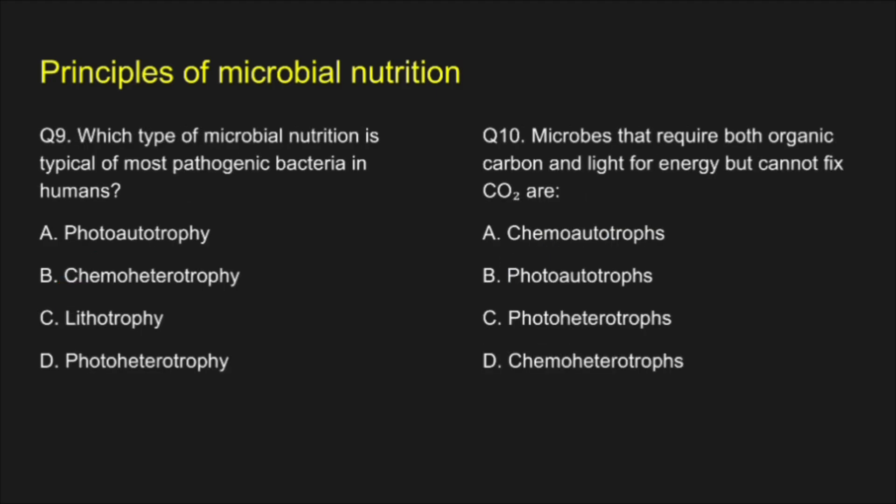Question 9. Which type of microbial nutrition is typical of most pathogenic bacteria in humans? A. Phototrophs, B. Chemoheterotrophs, C. Lithotrophs, D. Photoheterotrophs. The correct answer for question 9 is option B: Chemoheterotrophs.